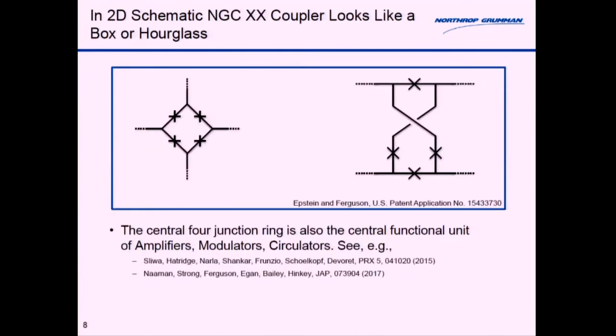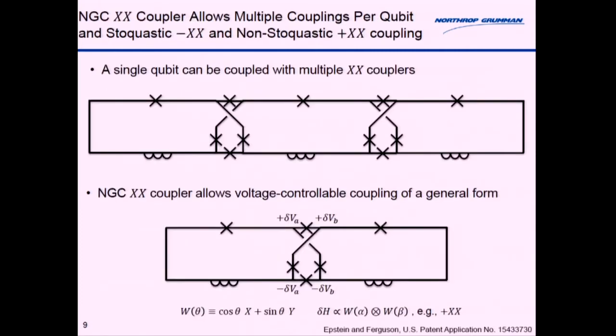In a 2D schematic this might look like a box or if you twist it around it can also look like an hourglass. This central unit of a four-junction ring has a lot of history in superconducting technologies. In particular it's very useful for generating amplifiers, modulators, and circulators. Yale has extensively used it in their designs and a recent design from Northrop Grumman also uses this essential topology. It's familiar in design work so it's also possible to do multiple XX couplings for an individual qubit.